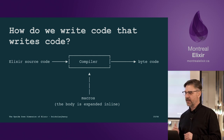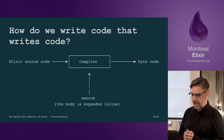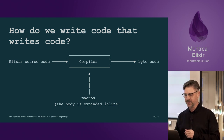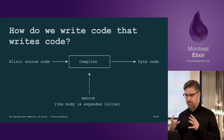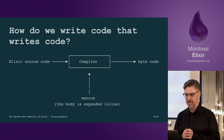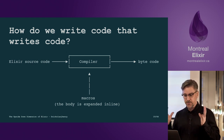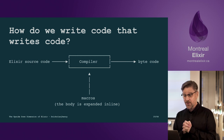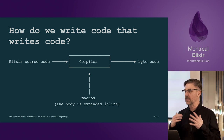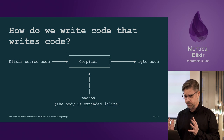How do we write code that writes code? At a very basic level, we have our Elixir source code that goes through a compilation process, which compiles our source code down to bytecode — a binary representation — and that gets executed on the virtual machine at runtime. To write code that writes code, we write macros. The simplest way to think about it is that the body of our macros gets inlined into our modules and functions.